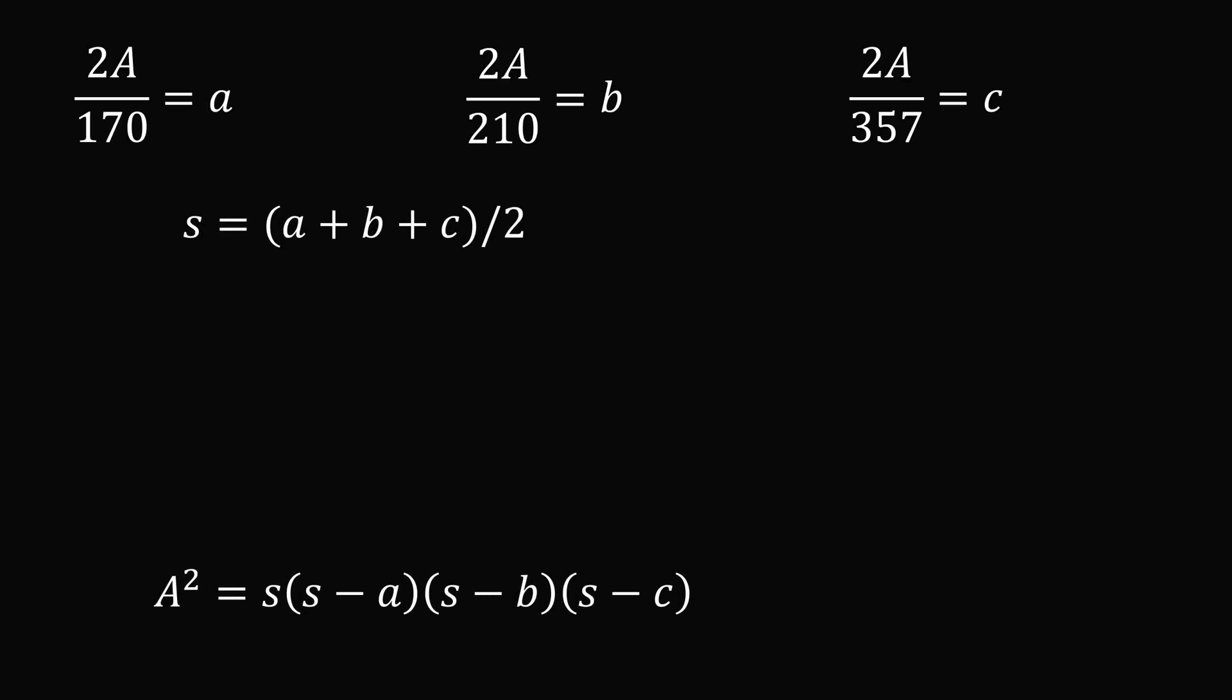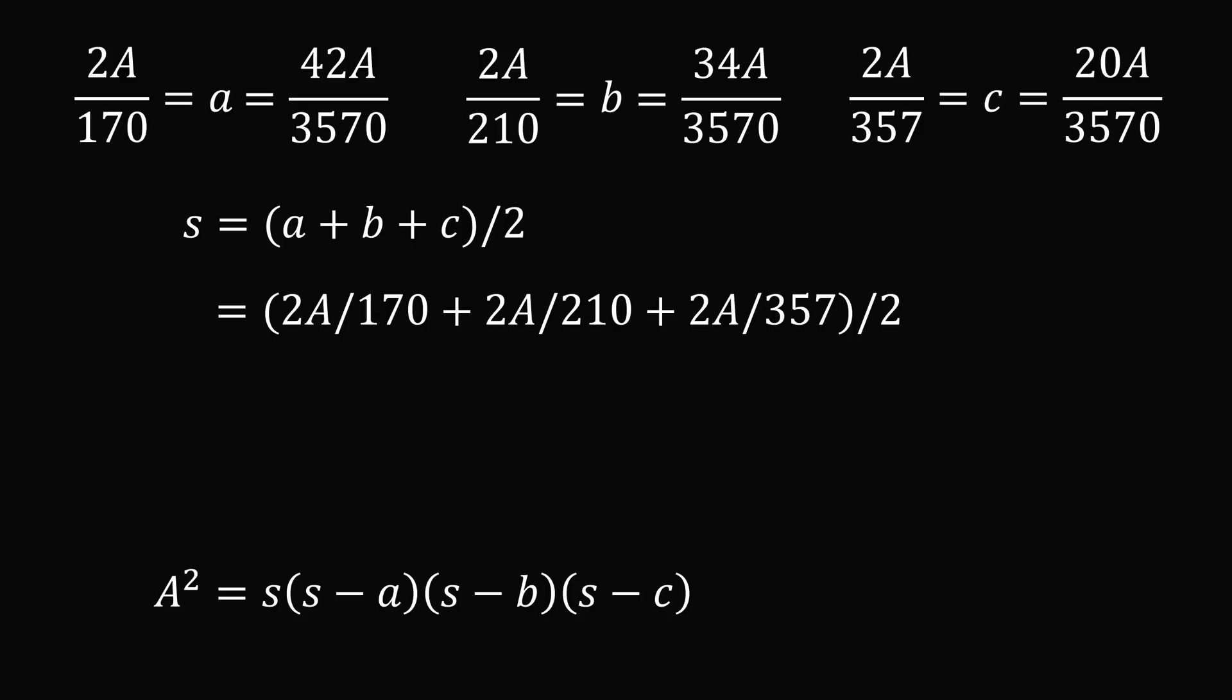Let's solve for the semi-perimeter in terms of the area. We'll substitute in, and then we will look for the least common multiple of 170, 210, and 357, so that the side lengths all have a common denominator of 3570. We can substitute in and then simplify to get the semi-perimeter is 48A over 3570.